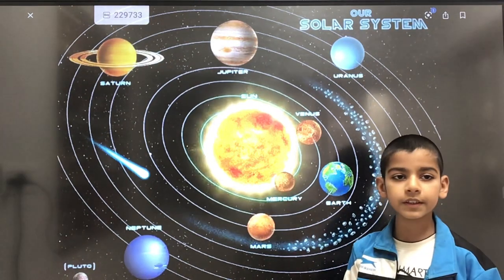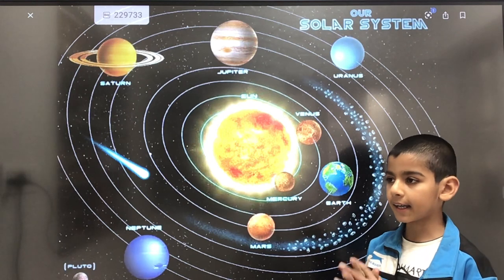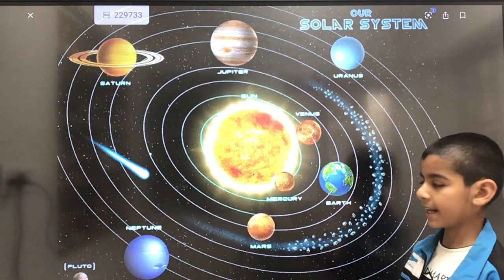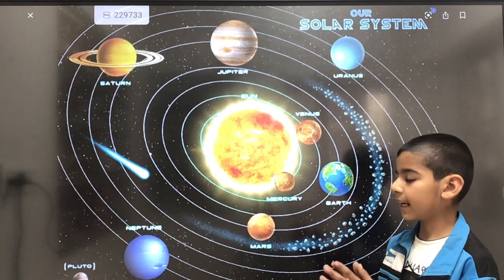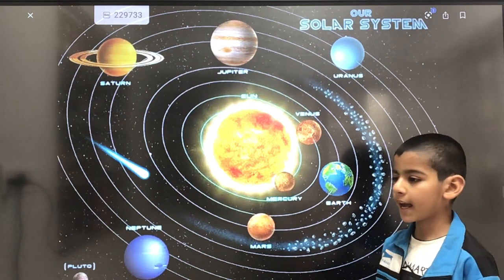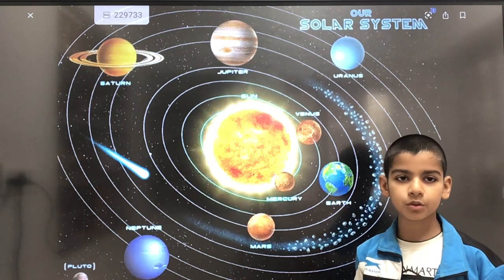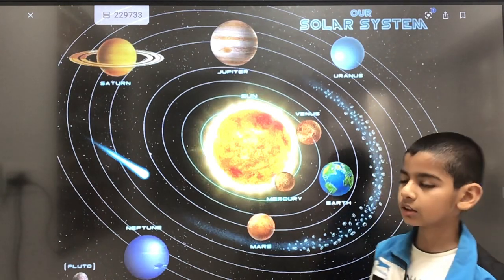The study of Universe is known as Cosmology. Our galaxy name is Milky Way galaxy and its age is 5 billion years. The nearest galaxy is Andromeda, and the closest star after the Sun is Proxima Centauri.